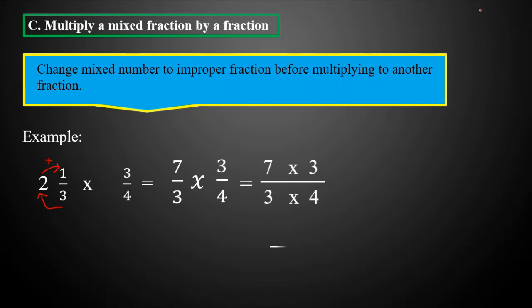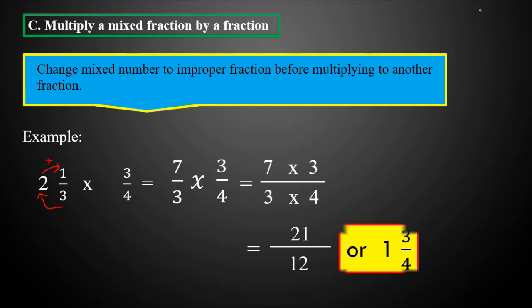Simplifying: seven times three equals twenty-one, and three times four equals twelve. Twenty-one over twelve is not yet in the lowest term, so we divide twenty-one by twelve, which gives one with a remainder of nine, so we have one and nine over twelve. Since nine and twelve can be reduced using their GCF of three: nine divided by three equals three, and twelve divided by three equals four. Our final answer is one and three-fourths.